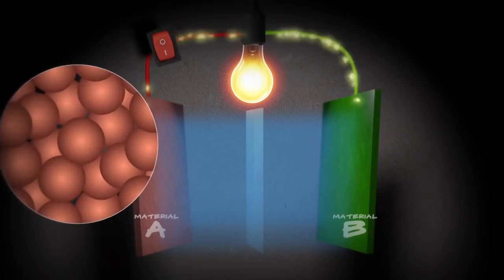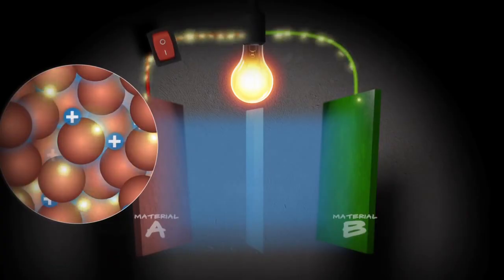Back at material A, the atoms are losing electrons, because that's where the electrons are coming from, and they begin turning into positively charged ions.